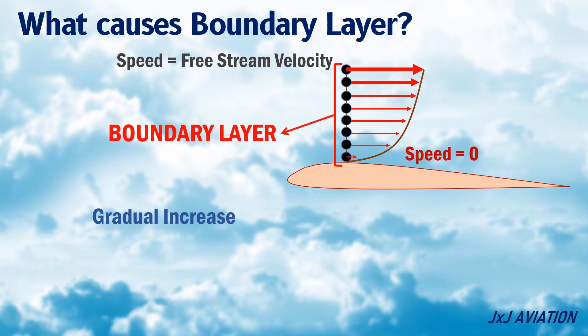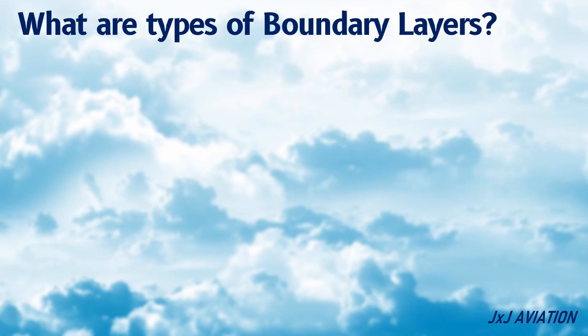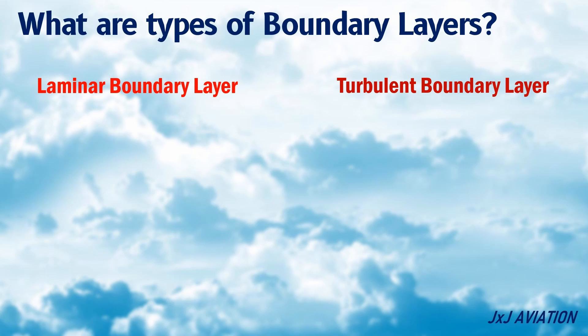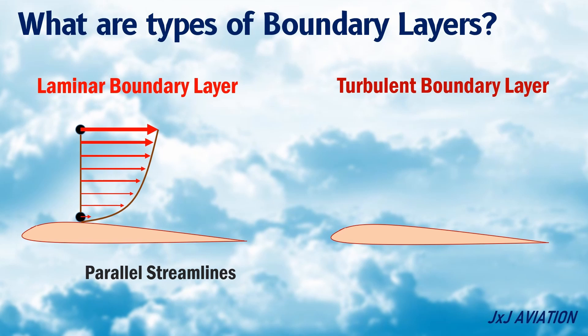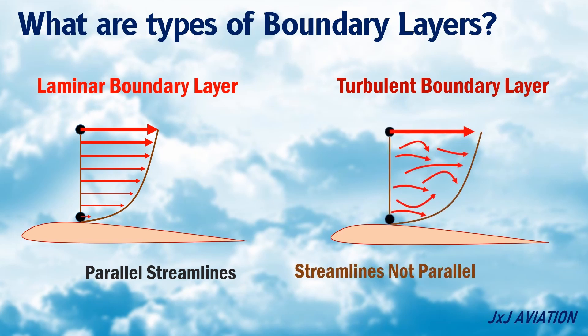This boundary layer will form only in a viscous fluid. There are two types of boundary layers: laminar boundary layer and turbulent boundary layer. A laminar boundary layer is one in which all the streamlines in the boundary layer move parallel to each other. A turbulent boundary layer is one in which the streamlines are not parallel and the particles tend to move randomly within this layer.